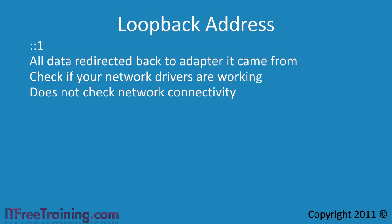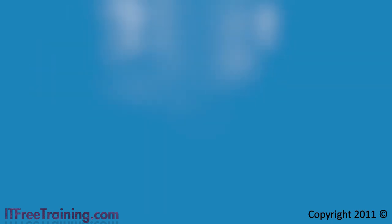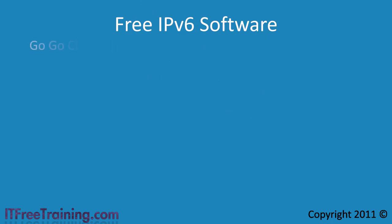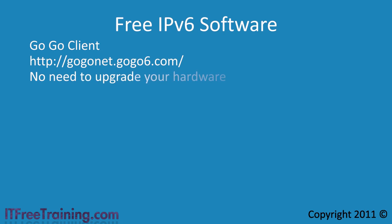Each day, more and more devices support IP version 6. In the real world, IP version 6 deployment has been slow. It is surprising that few ISPs even support IP version 6, meaning that buying an IP version 6 device may be a waste of time. If you want to start using the IP version 6 network and don't want to wait, consider downloading the GoGo client from GoGo6, available from their website. This client allows you to connect to the IPv6 network without having to upgrade your equipment.